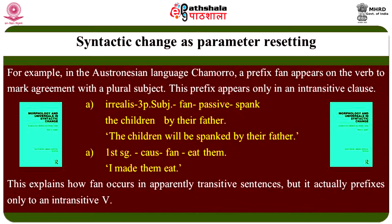In the second example, we can see that the morpheme 'fan' attaches as a suffix in example B, which on the surface is a transitive sentence. To explain the appearance of 'fan' in B, we have to take into account that it is a causative sentence. There are two clauses and the inner clause 'them eat' is intransitive — the verb 'eat' is intransitive here. Note that 'fan' appears inside the causative prefix but outside the verb 'eat.' This explains how 'fan' occurs in apparently transitive sentences but actually prefixes only to an intransitive verb.